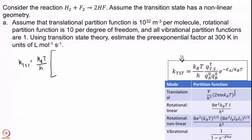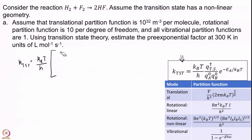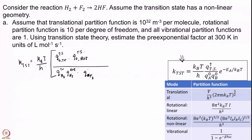Let me simplify that. The partition function of the transition state will be q translational of transition state times q rotational of transition state. Since vibrational and electronic are assumed to be 1, I will not bother writing them. This is divided by q_translational of H2 times q_rotational of H2 times q_translational of F2 times q_rotational of F2. This ratio is your pre-exponential factor — that is what we want to calculate.